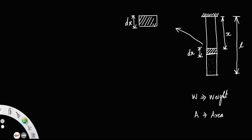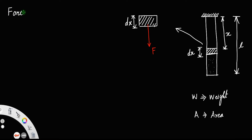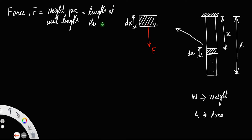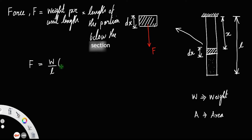Let us call that force F. The force F is equal to weight per unit length of the rod into the length of the section below, which is L minus x. So force F equals (W/L) times (L minus x).